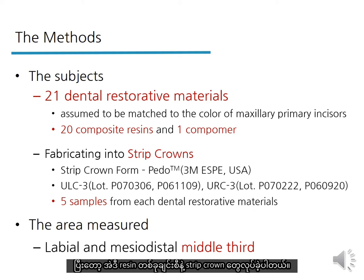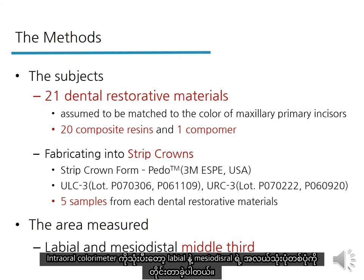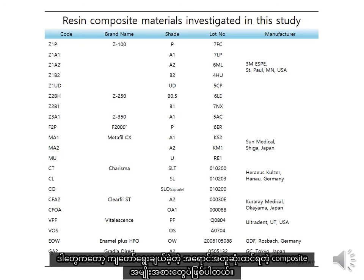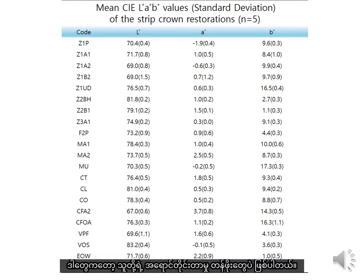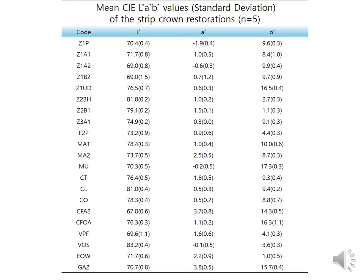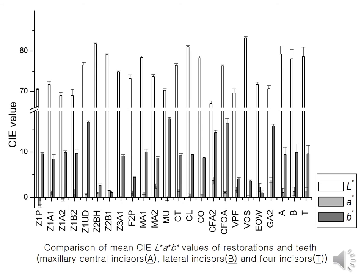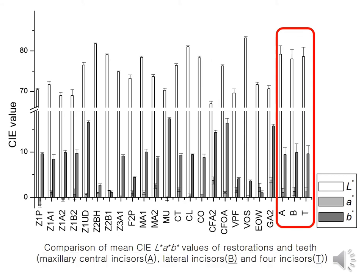I fabricated them into strip crowns and measured the labial and mesiodistal middle areas using the same intraoral colorimeter. These are my candidates for the best color-matching composites, and these are their colorimetric values measured. I compared them with the mean values of natural teeth. Letters A, B, and C stand for maxillary central incisors, lateral incisors, and canine incisors respectively.